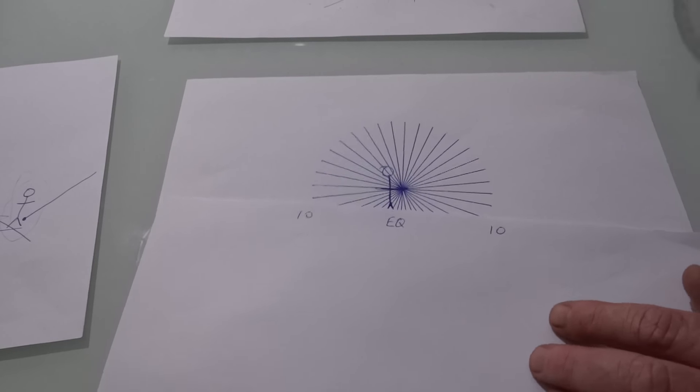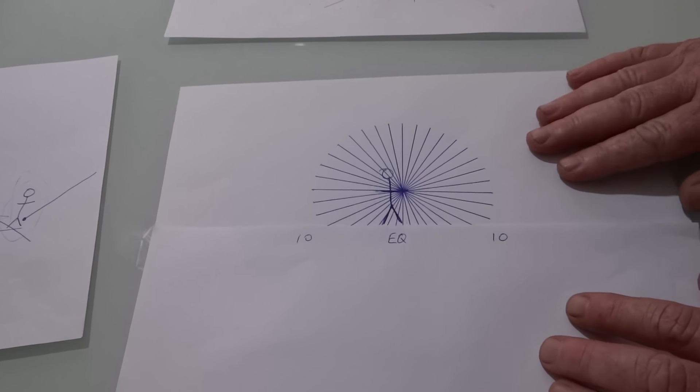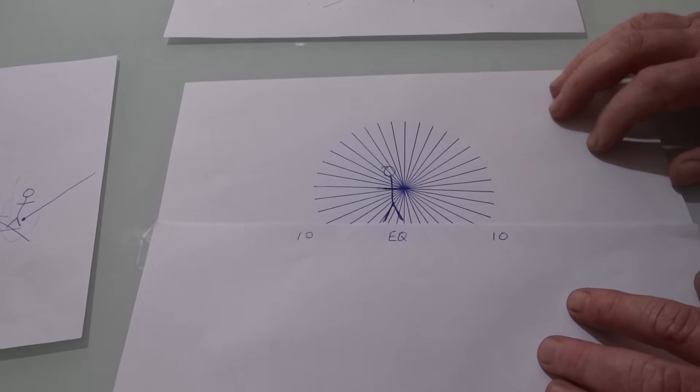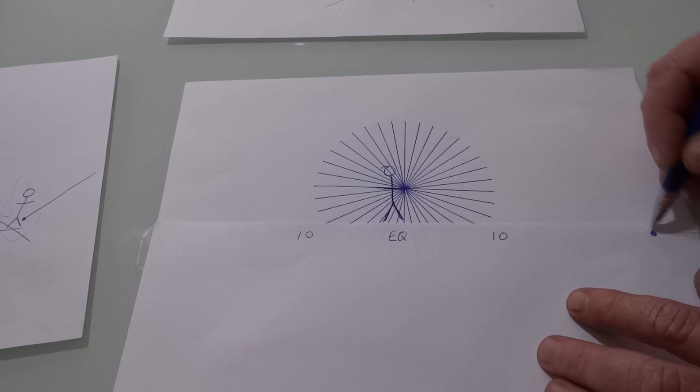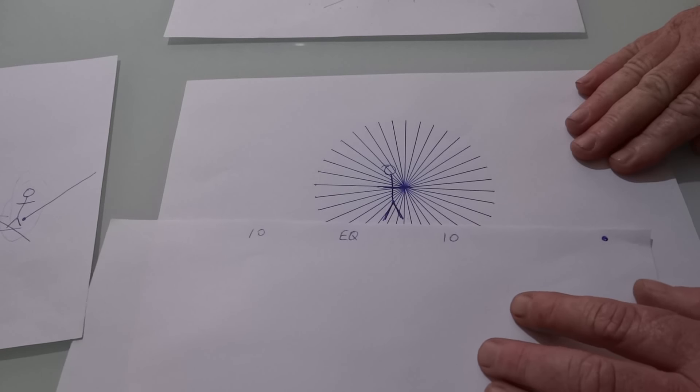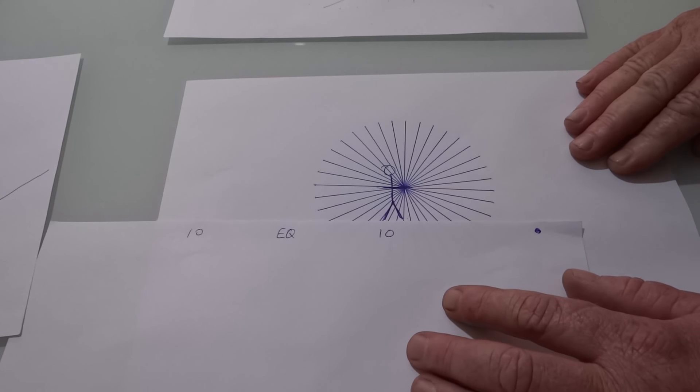This person is always staying in the same location. Regardless if you think it's a ball earth or a flat earth, when this person moves ten degrees towards the pole star, the pole star is actually coming towards him.